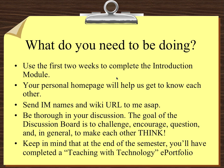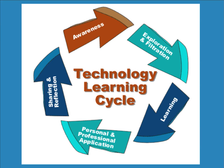The last thing I want to talk about in this short video is the technology learning cycle. This entire course is built on this theory of learning, and it's so applicable to every aspect of our lives. We start a learning cycle at the point of awareness — we become aware of something new, like texting on a cell phone. You became aware of it, you explored it, filtered out what may or may not work for you, then learned how to do it, and started applying it in your personal or professional life. Then naturally, as adult learners, we share it with somebody else and reflect on how it makes our lives easier.